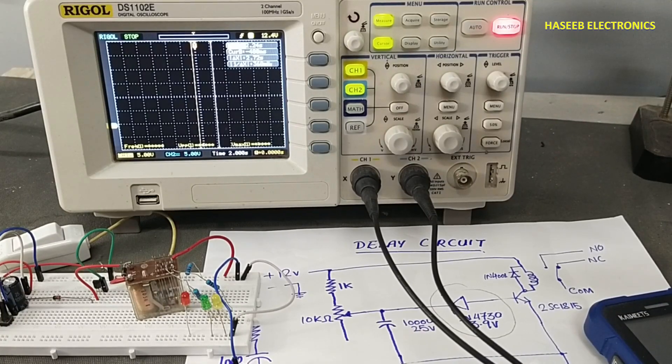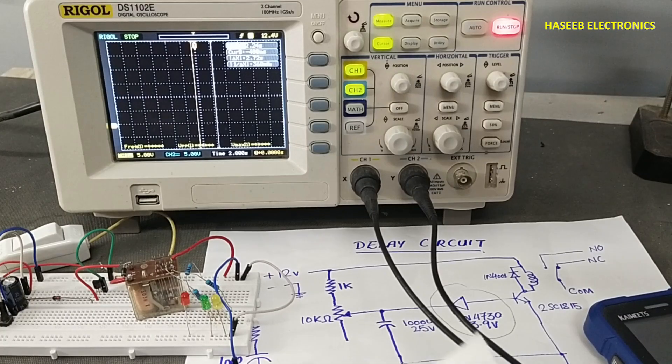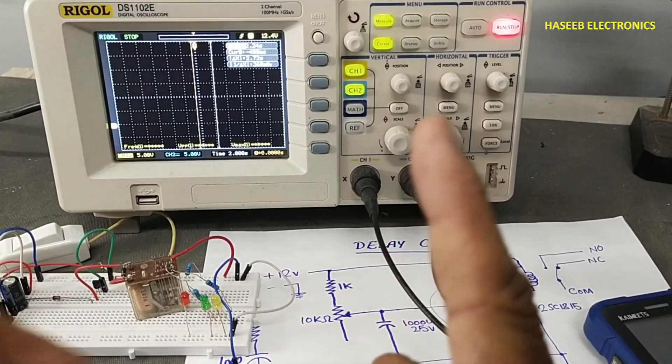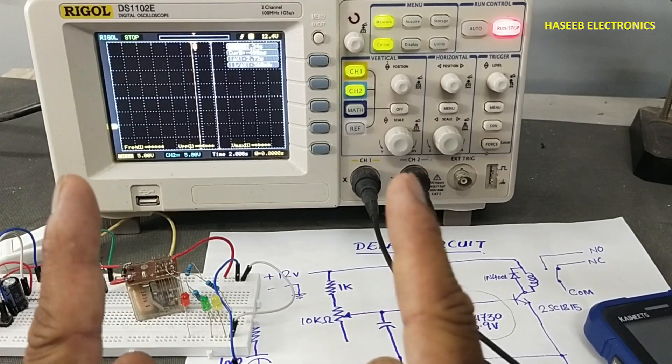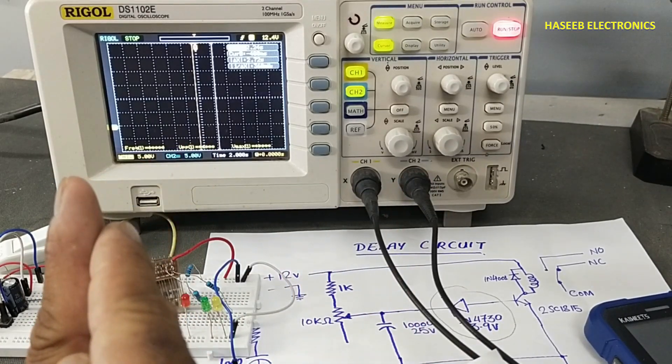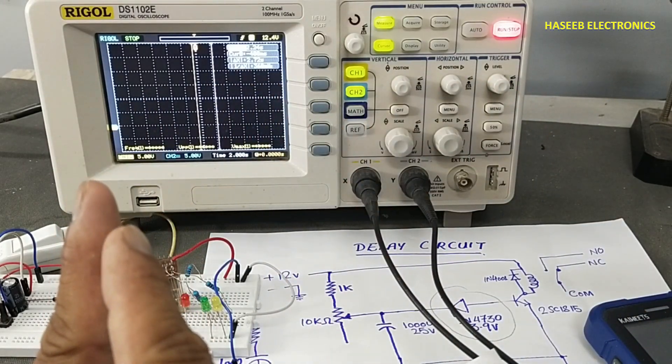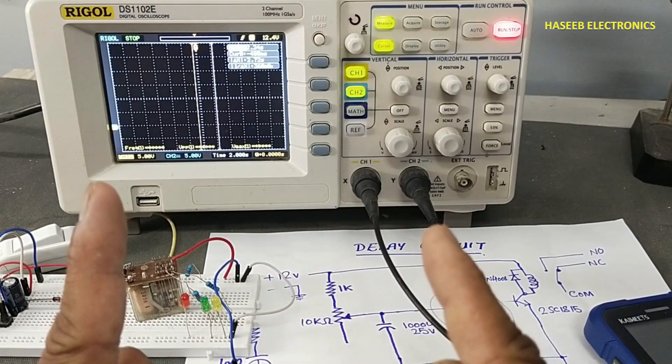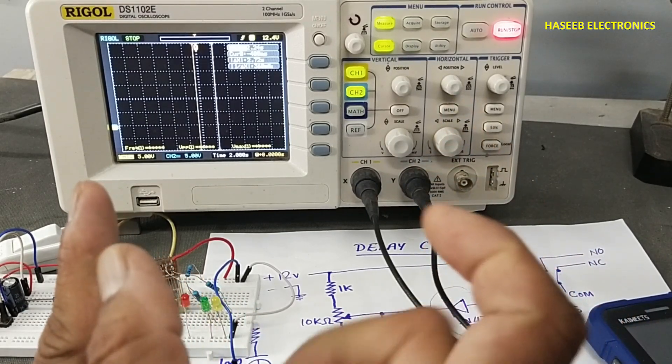Asalaamu alaykum wa rahmatullahi wa barakatuhu friends, welcome back to my channel. In this session we will see how we can take measurement of a time gap or elapsed time between two signals. One signal starting from here and reaching its maximum level, and we will compare the second signal when it goes high. We will measure this time gap using an oscilloscope.